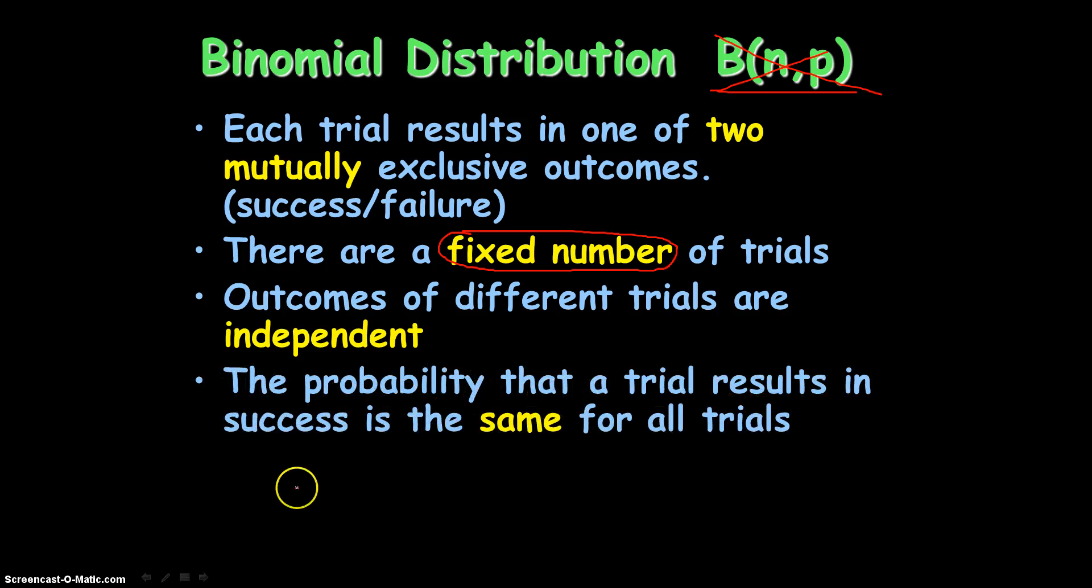And the probability that a trial results in success is the same for all trials. Think of it this way. If you were to flip a coin, the probability that you land, assuming it's a fair coin, the probability of landing on heads is one half every single time. No matter how many times I flip that coin, on the next trial, the probability that I'm going to land on heads is still going to be one half. So whenever you're flipping coins, that would be an example of a binomial distribution, because the probability of success is the same for all trials.